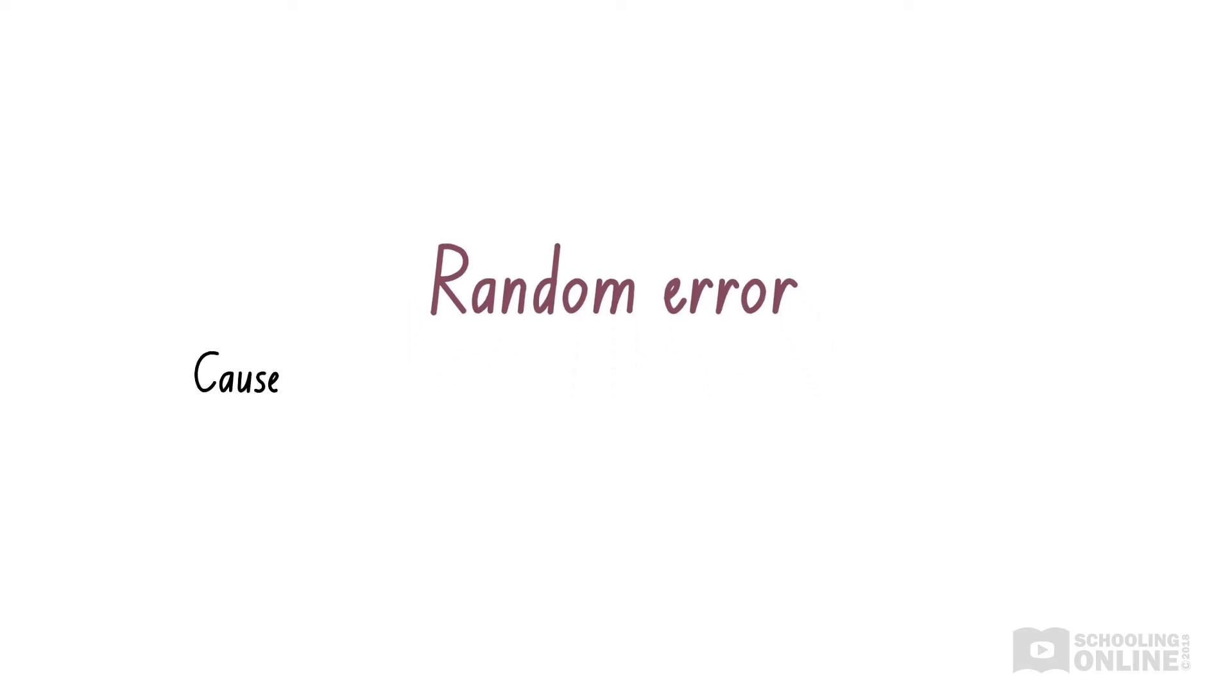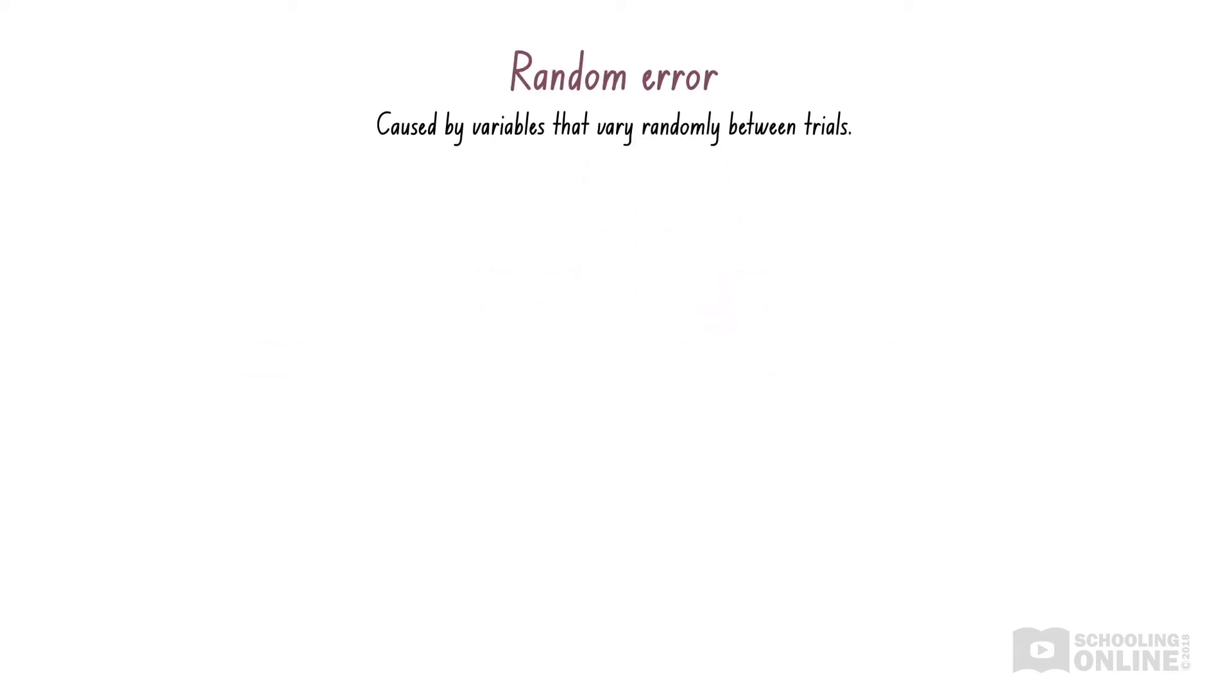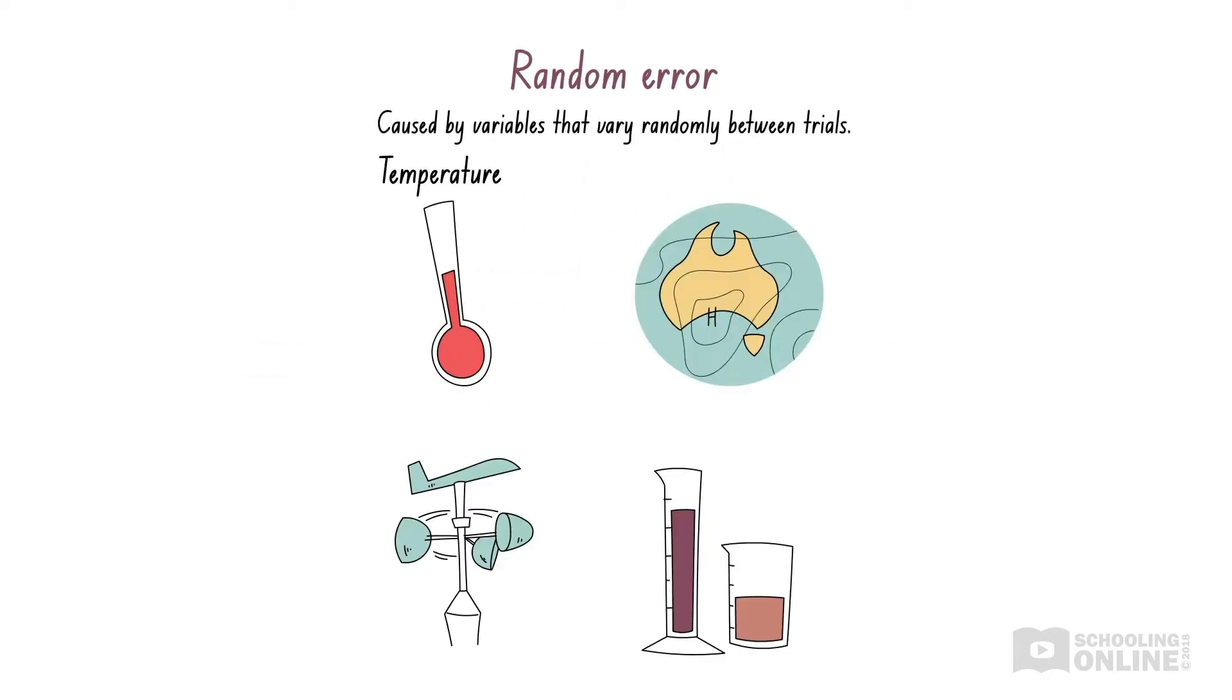So where does this random error come from? As the name implies, it is caused by variables that vary randomly between trials. This includes things like temperature, atmospheric pressure, wind speed, and the masses and volumes of reagents that you use in an experiment.